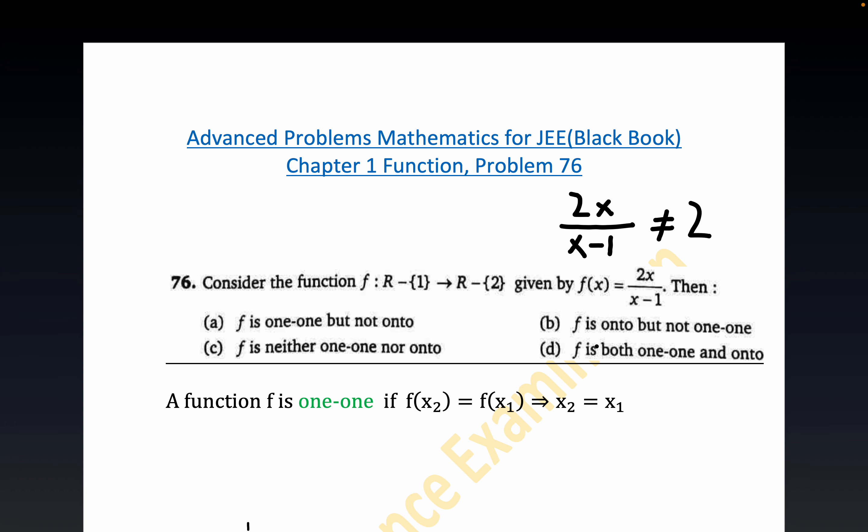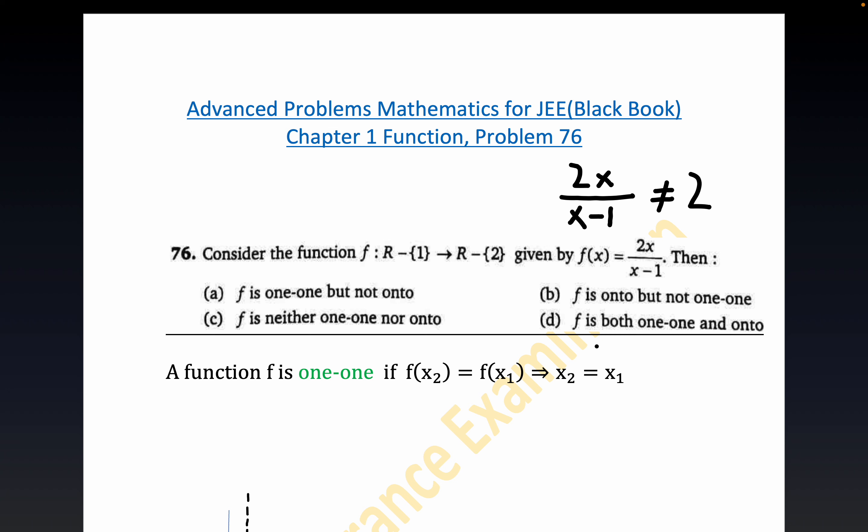Now I'll start out with a definition. By one-to-one we mean this, and let me just give you a concrete example. It says if two images are equal, then their pre-images have to be equal. So let's use the concrete example f of x equals x squared.